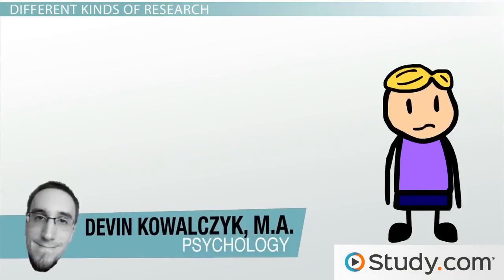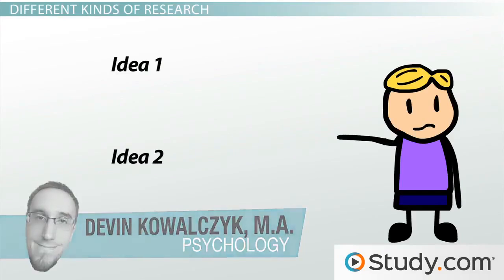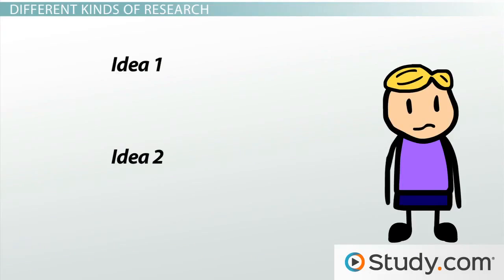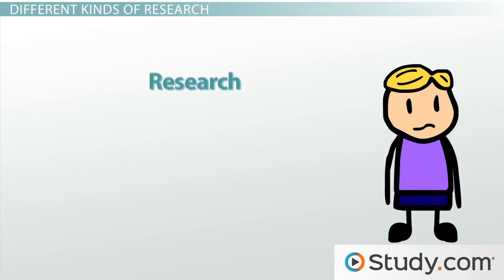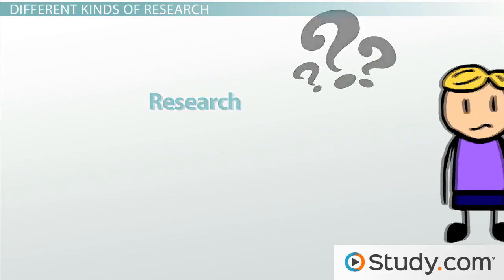Human beings like to categorize things. We don't like amorphous groupings of ideas floating around — it just makes things difficult to comprehend. I'm not going to shock anyone when I say that one thing that is divided into categories is research. One way to make research topics more manageable is dividing the topics by asking the question: what will this be used for?